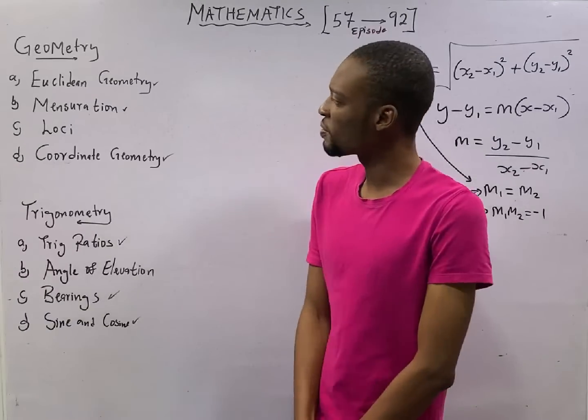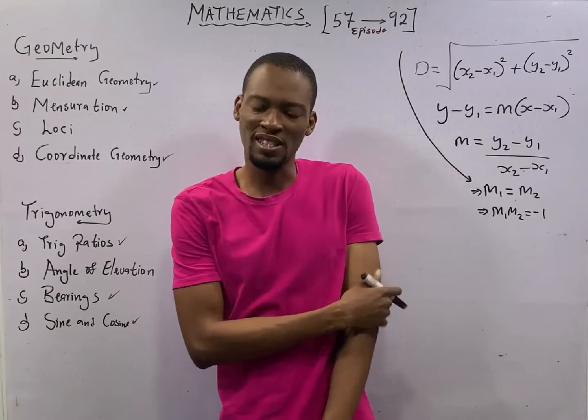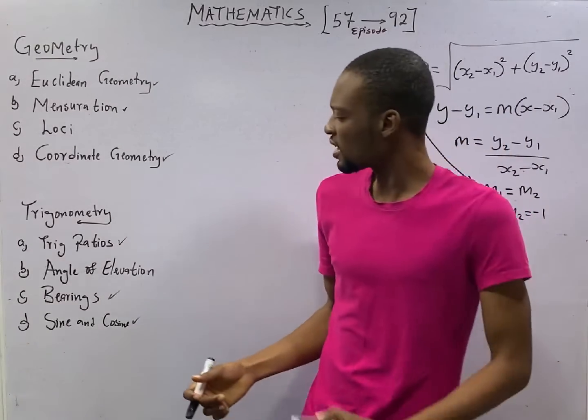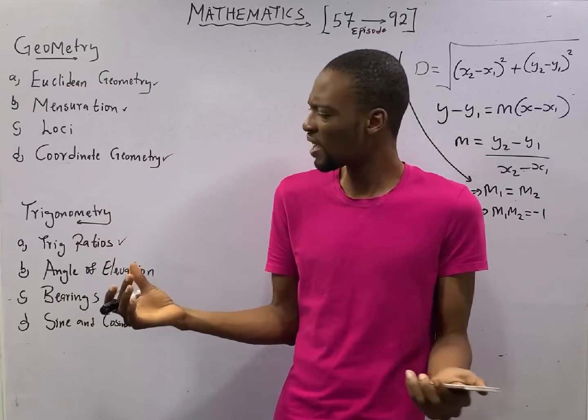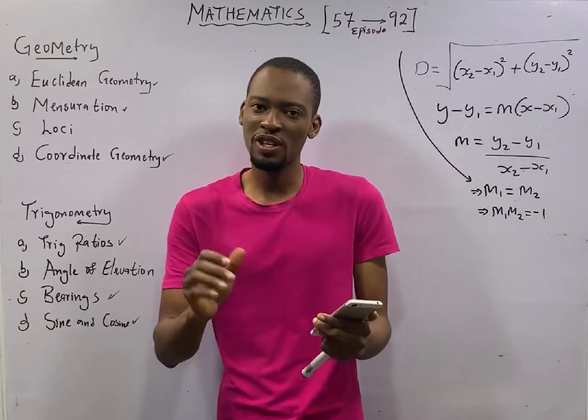This is episode number 75 of the 120 days to JAMB Mathematics with Flash Isaac. In this episode, we shall be looking at questions under Coordinate Geometry and under Equations of Line.